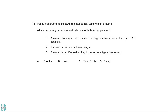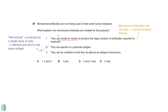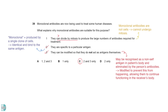One is wrong — monoclonal antibodies are not cells; they cannot undergo mitosis. Two is correct: monoclonal refers to their production by a single clone of cells, so they are identical and bind to the same antigen. Three is correct — when they are introduced to a patient's body, they may be recognized as a non-self antigen and eliminated by the person's antibodies. We can modify them to prevent this from happening, allowing them to continue functioning in the receiver's body.